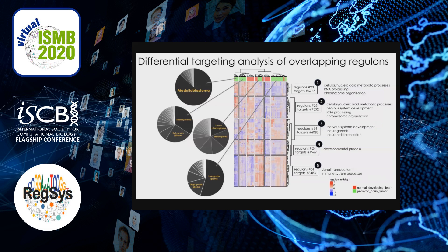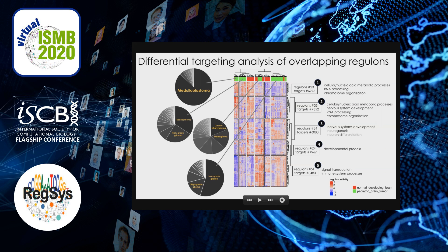We've also done a differential targeting analysis across the normal and tumor cohorts. The heatmap shows five clusters of regulons that are distinct in their targets as well as their size. Gene set enrichment analysis on the targets of these regulons found that they are functioning very divergently. Our next step is to identify which tumor type and which developmental brain stage engage which kinds of regulons. For instance, medulloblastoma engaged regulons from cluster 1 and cluster 2, whereas craniopharyngioma engaged regulons from cluster 4 and cluster 5.